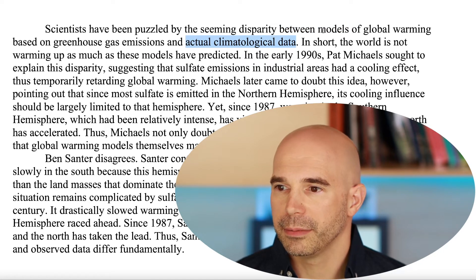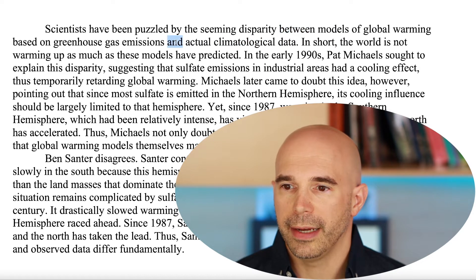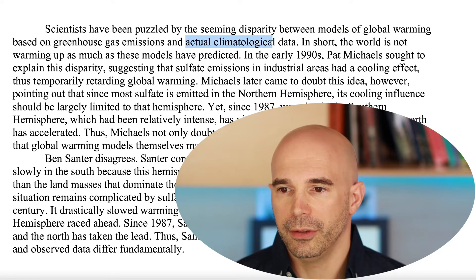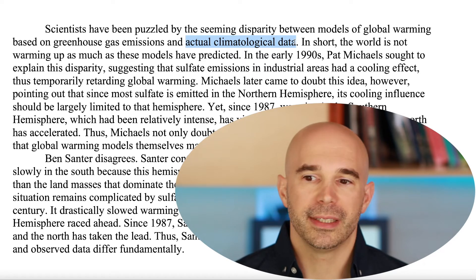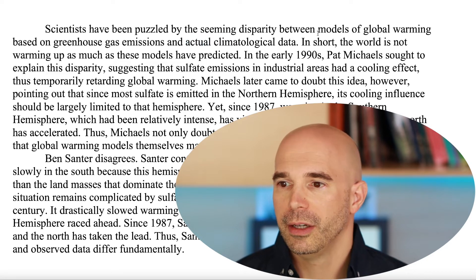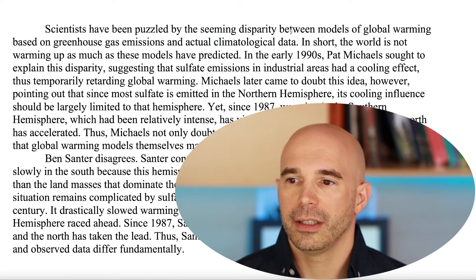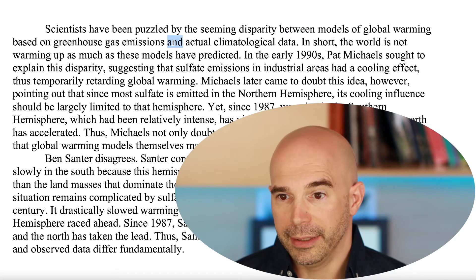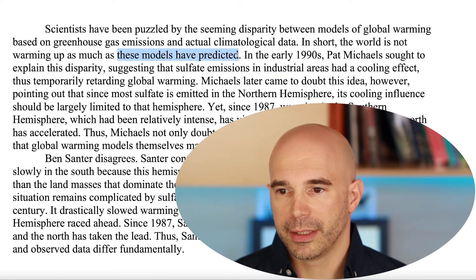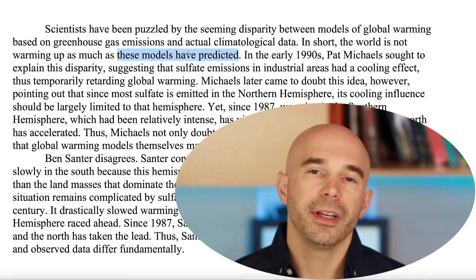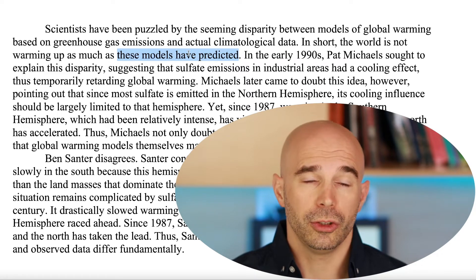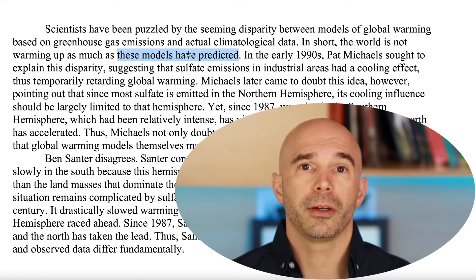You could argue that "these models" is a pronoun — so what is it referring to? It must be referring to the models from the first sentence. Going back to that first sentence, because we identified the pairing of the word "between" and the word "and," we can tell that actual climatological data is not a model. Model is basically the opposite of actual. But you can also tell just using grammar, without fully understanding the meaning. And "these models have predicted" — that's a present perfect verb. So far, we've done two sentences into this reading comprehension passage.